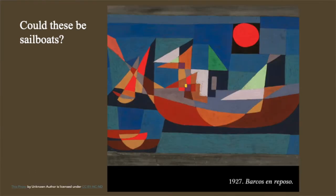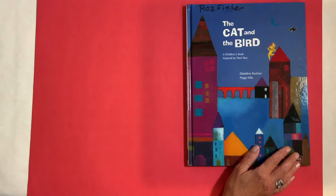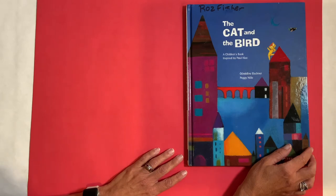This next one has shapes that make me think of something. What does it make you think of? I think of sailboats. It's interesting how just a shape can make you think of an object. It's because our whole world is made up of shapes. Next, we're going to listen to a book about Paul Clay and his art called The Cat and the Bird. It's a children's book inspired by Paul Clay. The author's name is Geraldine Elsner and the illustrator is Peggy Neal. You will notice some of his art in the illustrations. There's a famous painting of his very own cat painted by Paul Clay in the book as well.